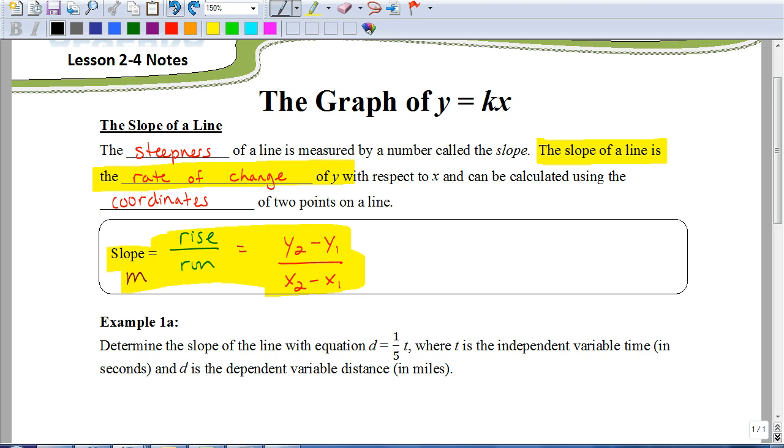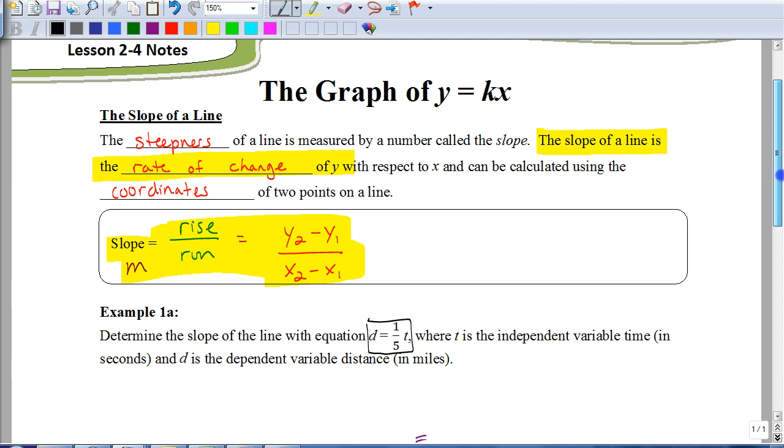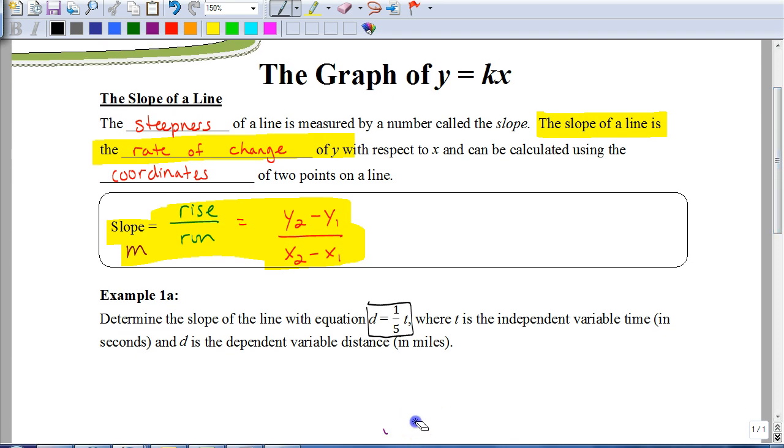Let's look at this first example here. Now, if you recognize, it says determine the slope of the line with equation d equals one-fifth t, where t is the independent variable for time in seconds, and d is the dependent variable for distance in miles. Now, you should recognize that this equation here is an example of direct variation. In this example, they're asking you to find the slope. Well, whenever it's in that form, the slope is going to be whatever your constant of variation is. In this case, one-fifth.